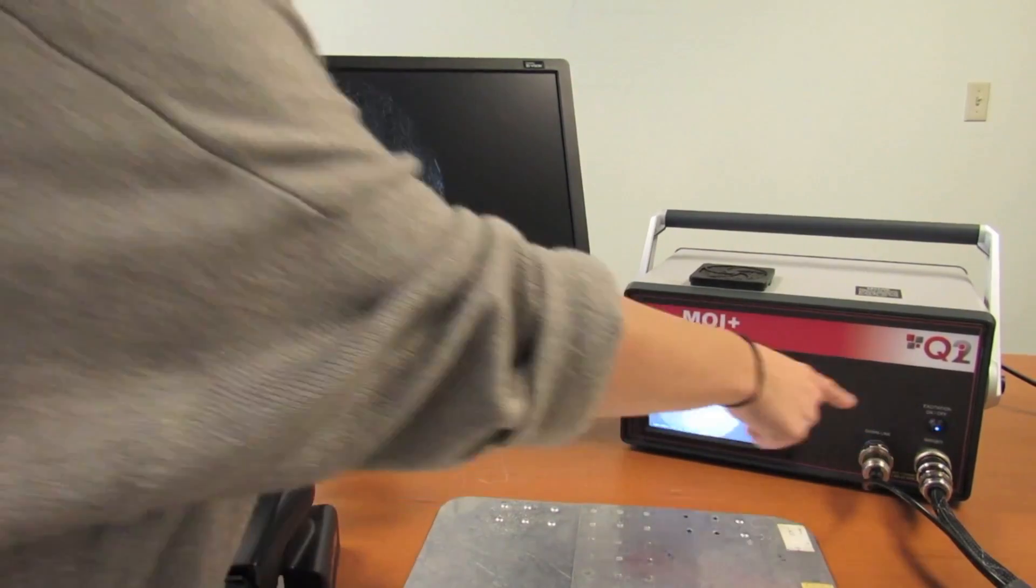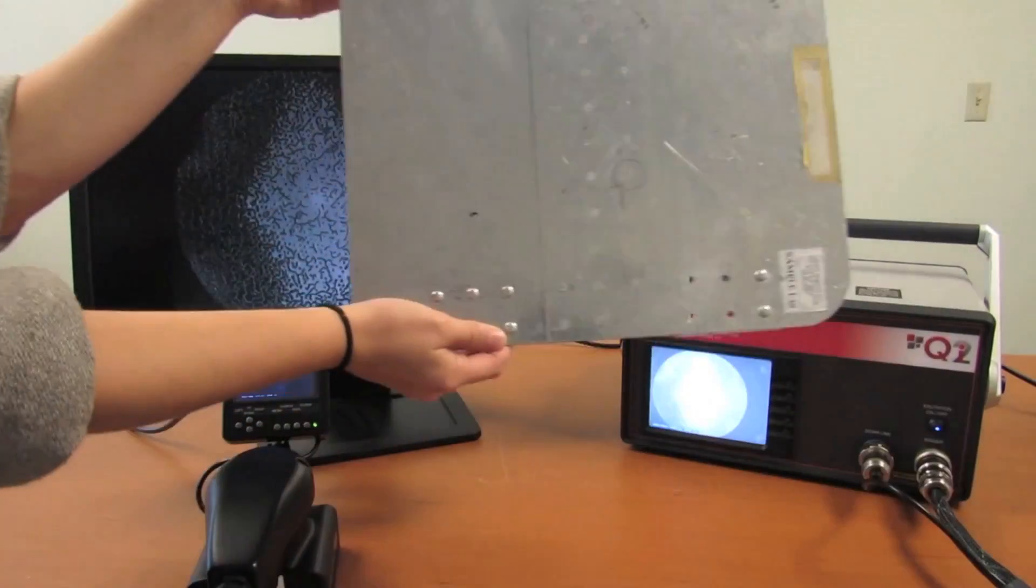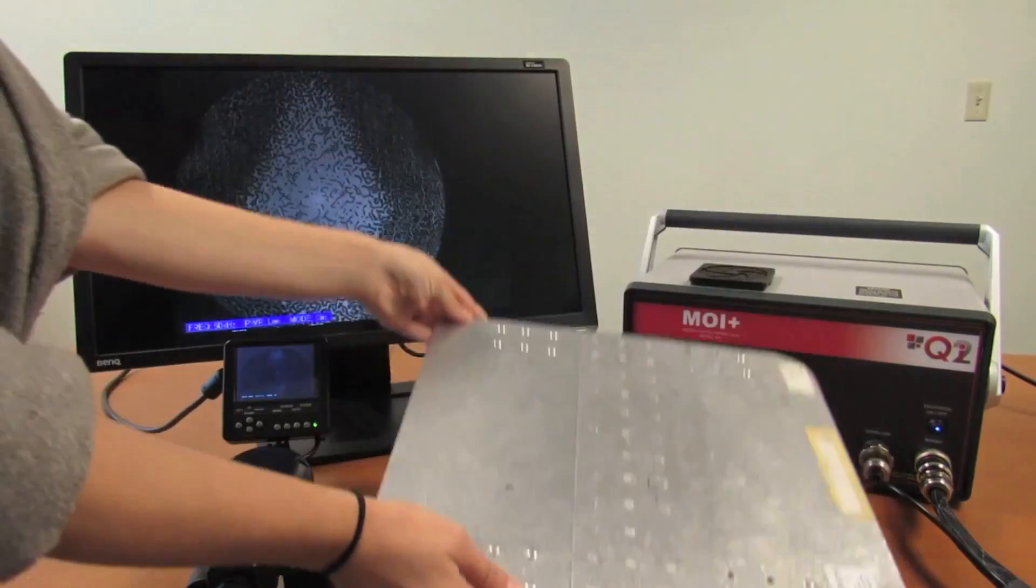With our excitation built into the imager, the MOI Plus rapidly produces images of areas ten times faster than eddy current probes alone.